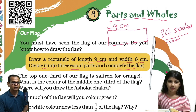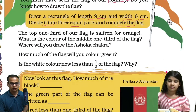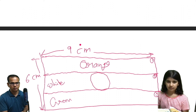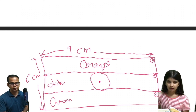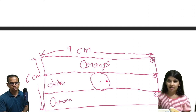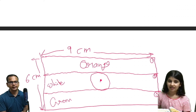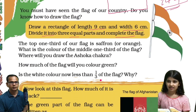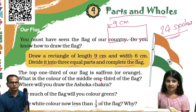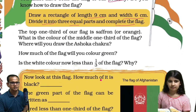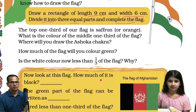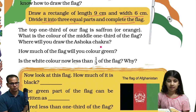I cannot draw 24 spokes here, but this is the one. We can draw 24. Shall we read next? Yes. And where will you draw the Ashoka Chakra? Tell me. What is the first?